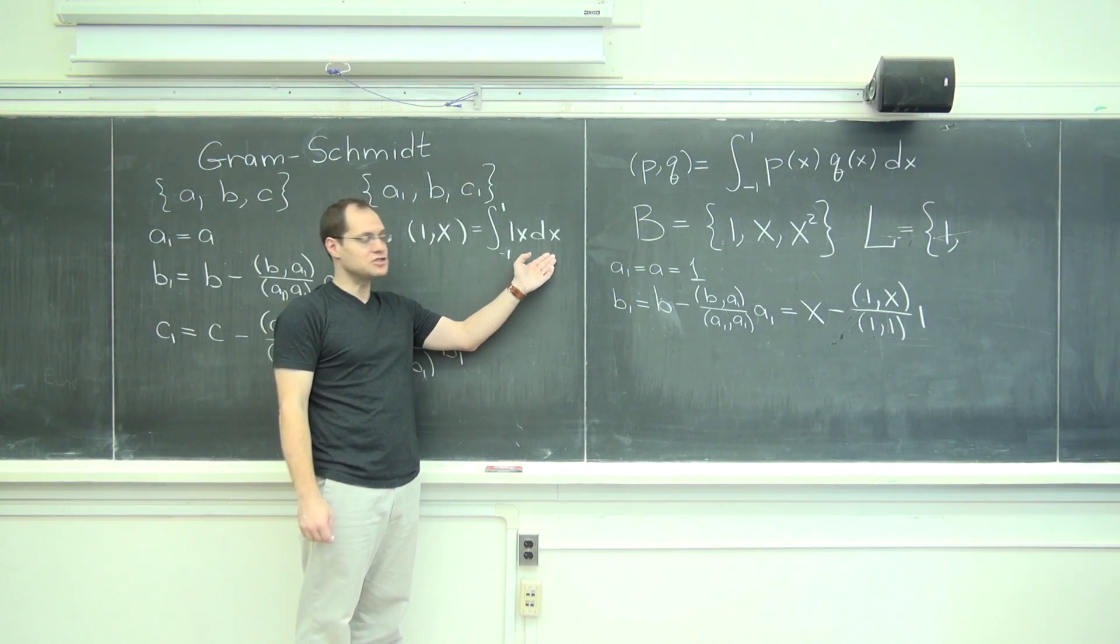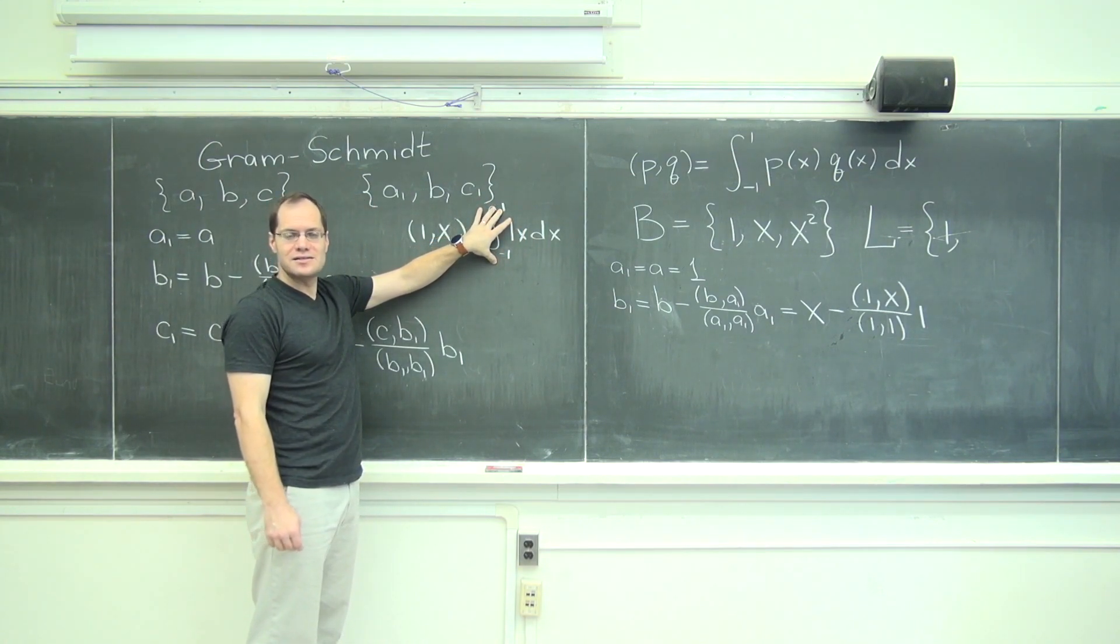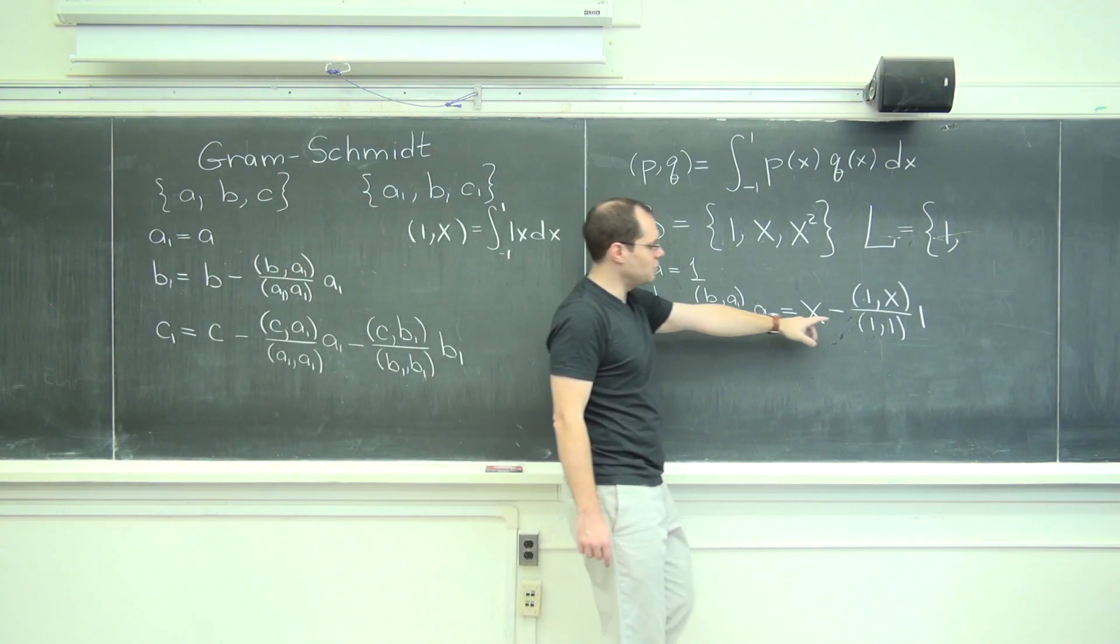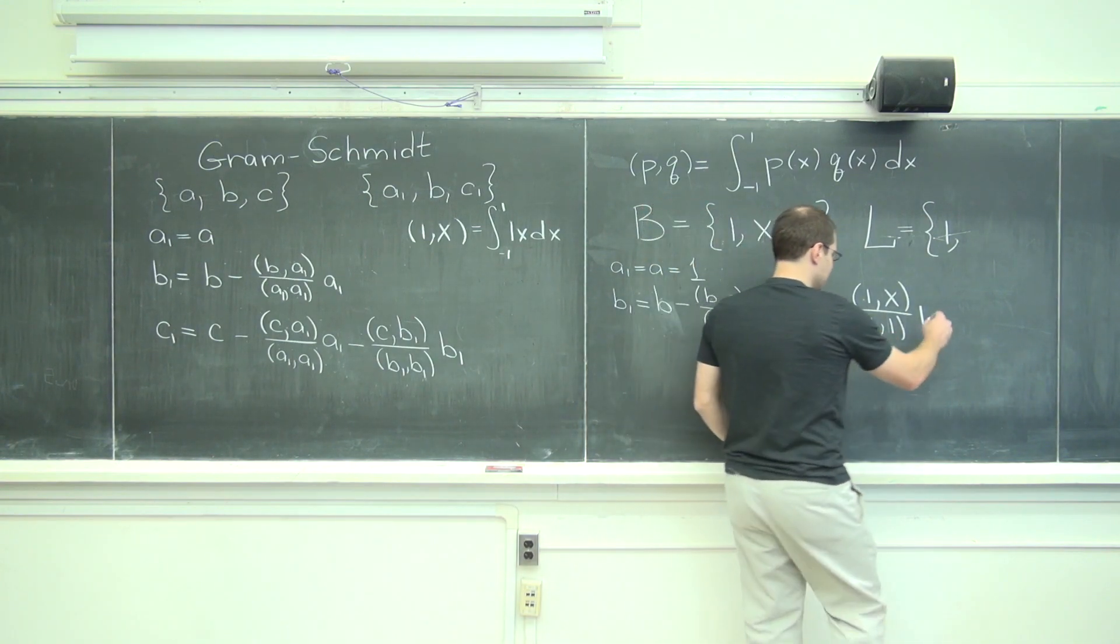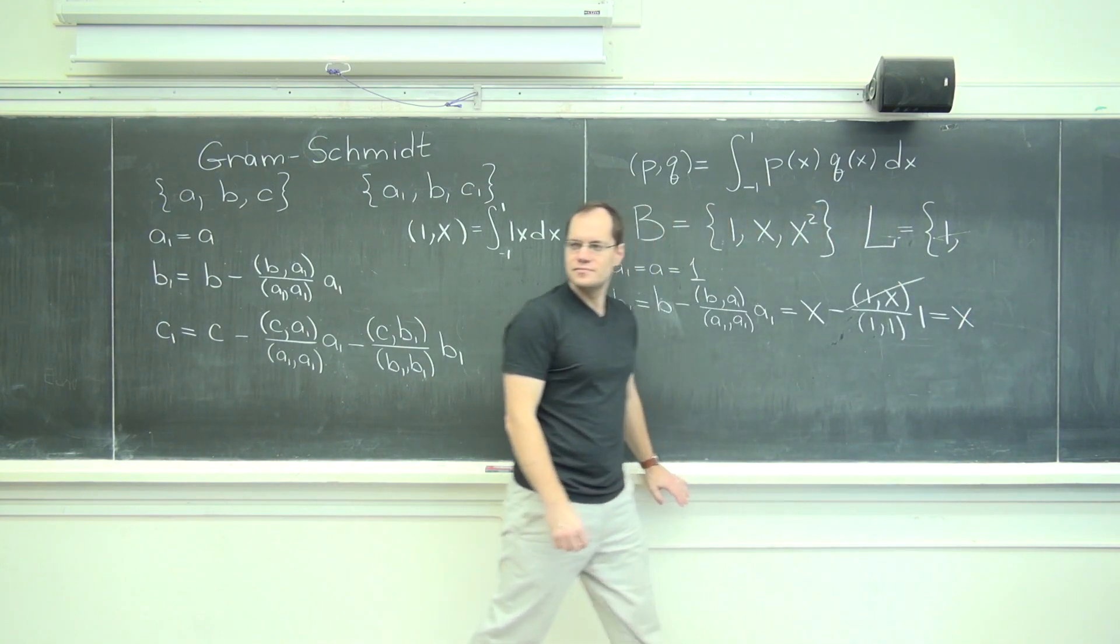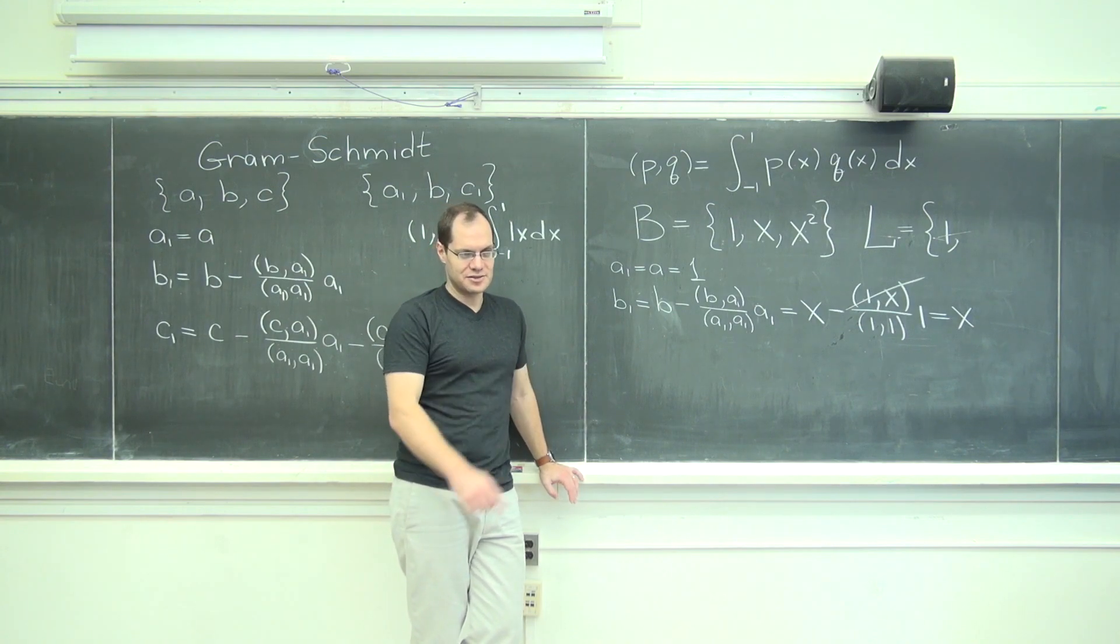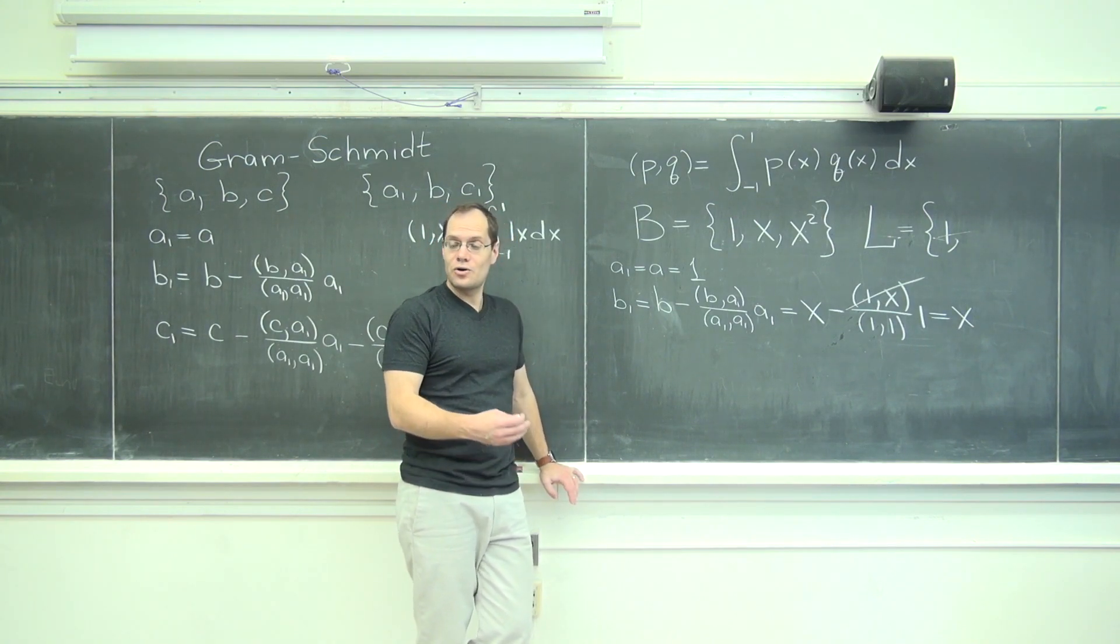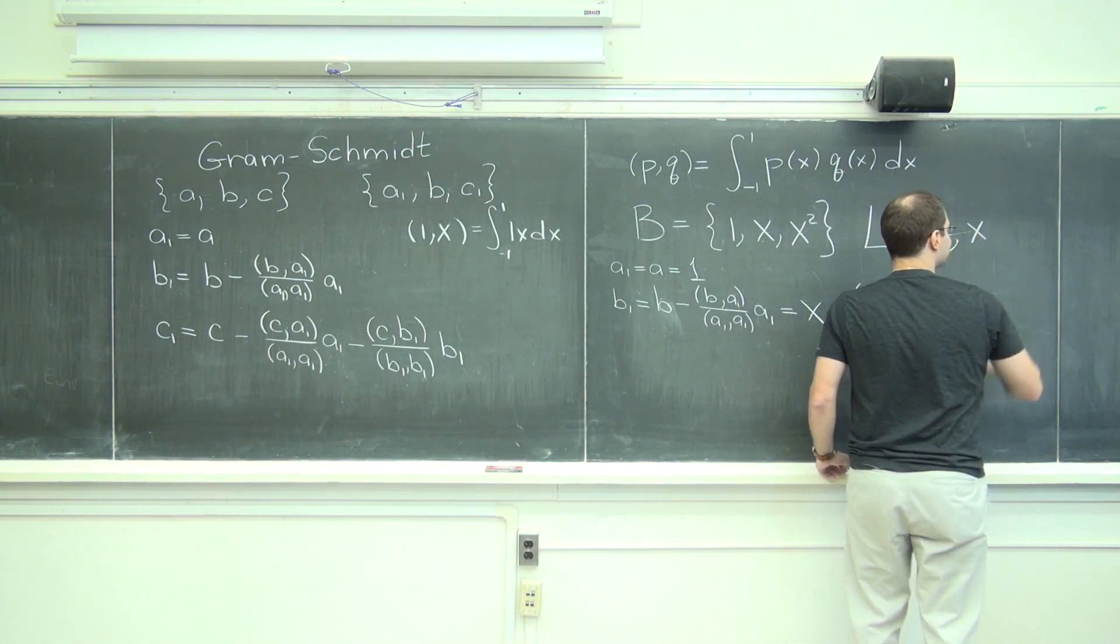What is this integral without doing any work? Zero. Zero. Odd function integrated over a symmetric domain. Zero. So it doesn't even matter what 1 dotted with 1 is. This polynomial will be unchanged. That's zero. So 1 and x are already orthogonal. Kind of answers your question. So it's orthogonal still works. It's just that it does nothing. So x.